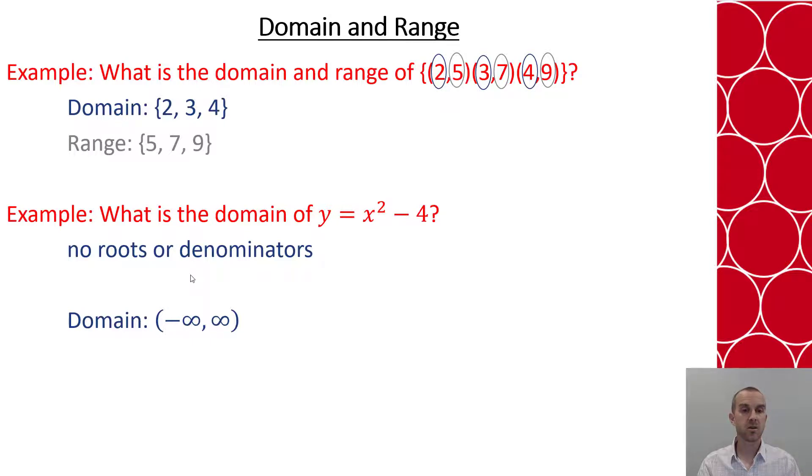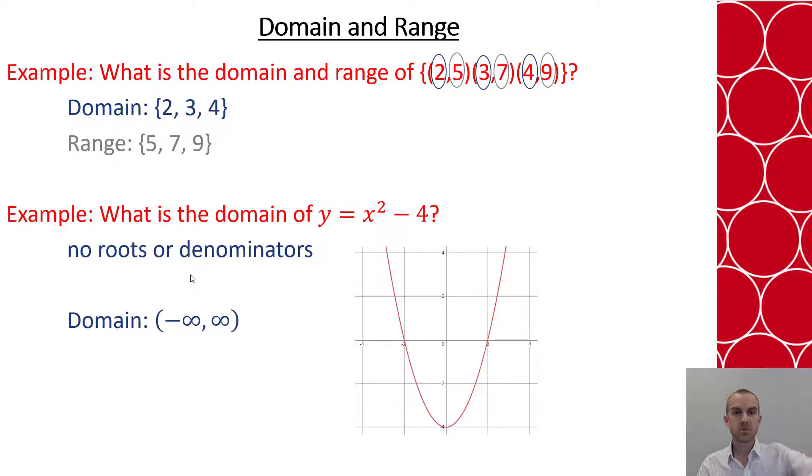Now if we want to look at the range, the easiest thing to do is to graph it for what we're going to do. And we want to look going from bottom to top and say is there a place that the range stops or starts in either direction? Here I'm going to start at the very bottom. I see it curves to this vertex which hits right at negative 4. And as I look upward, the graph goes on forever.